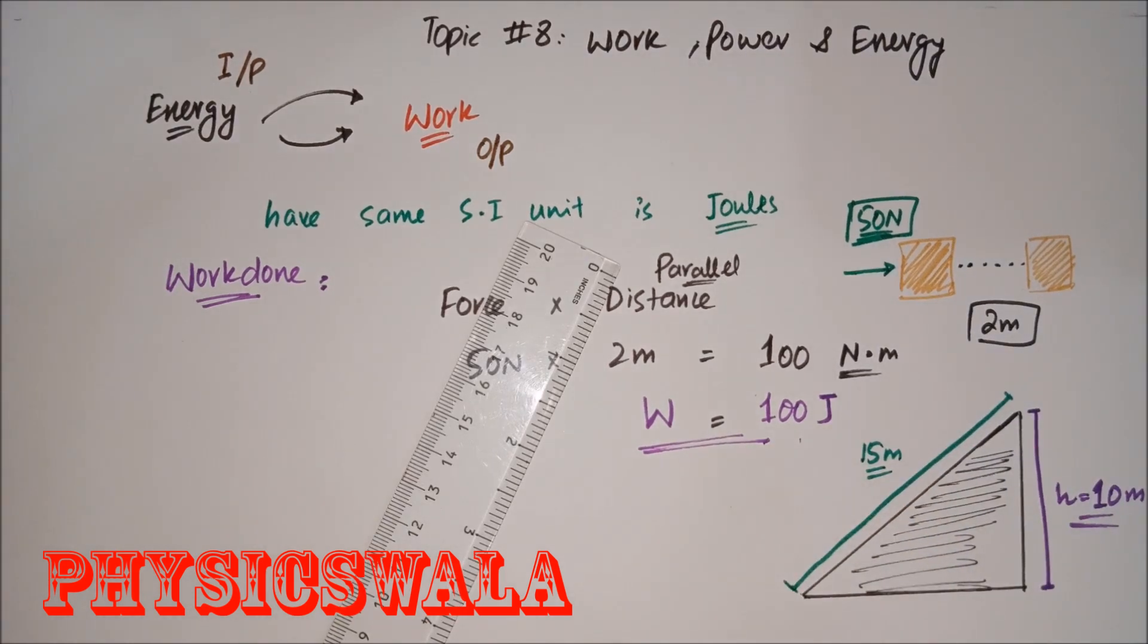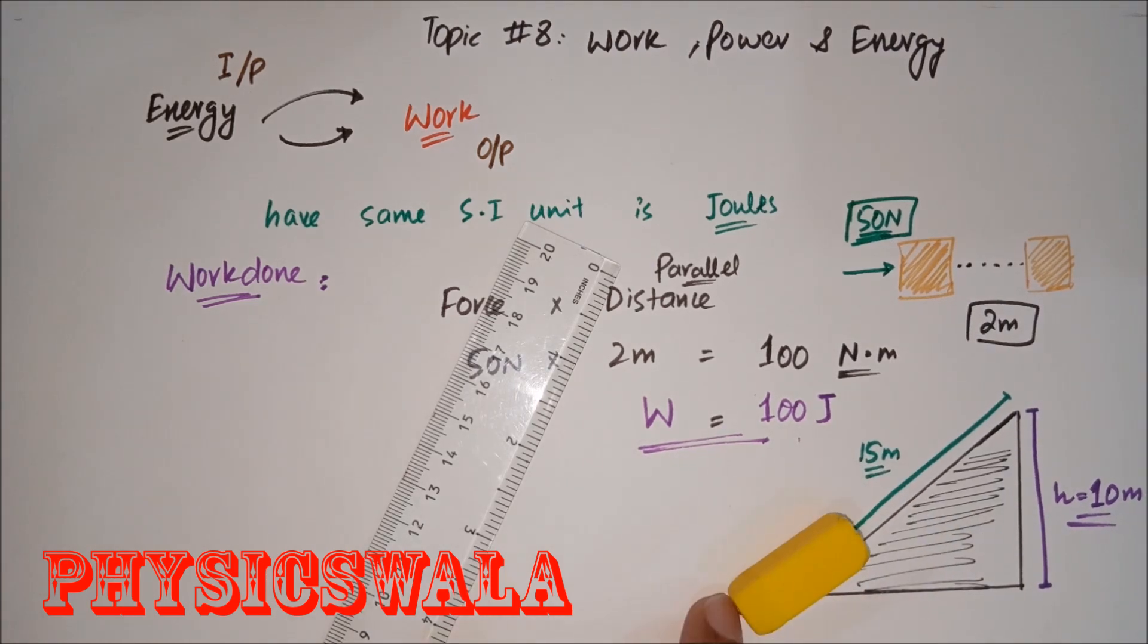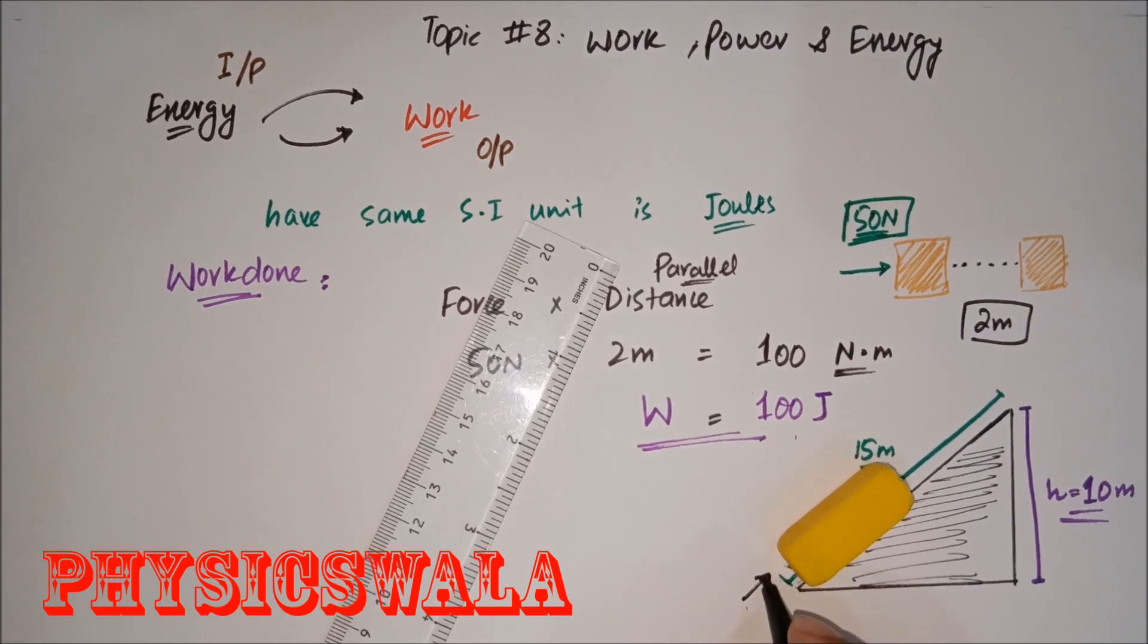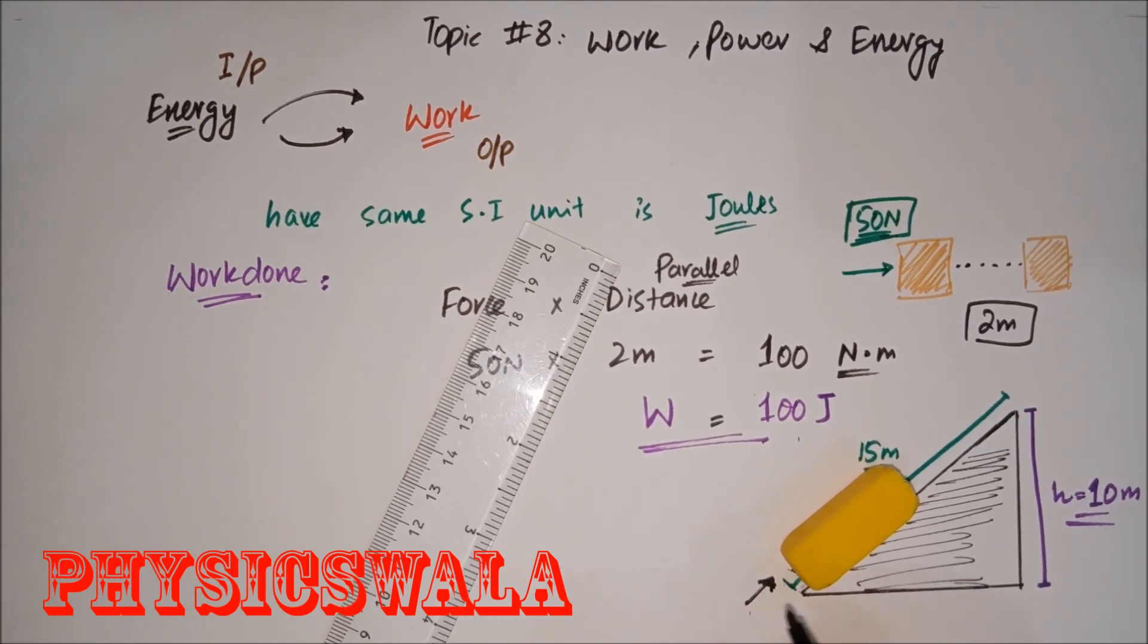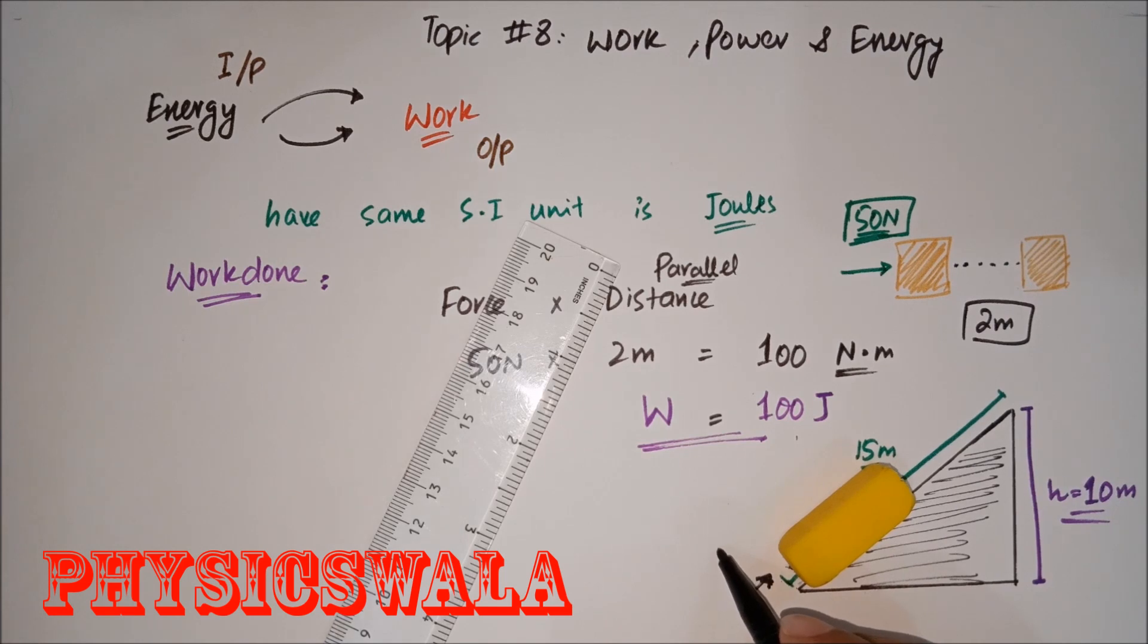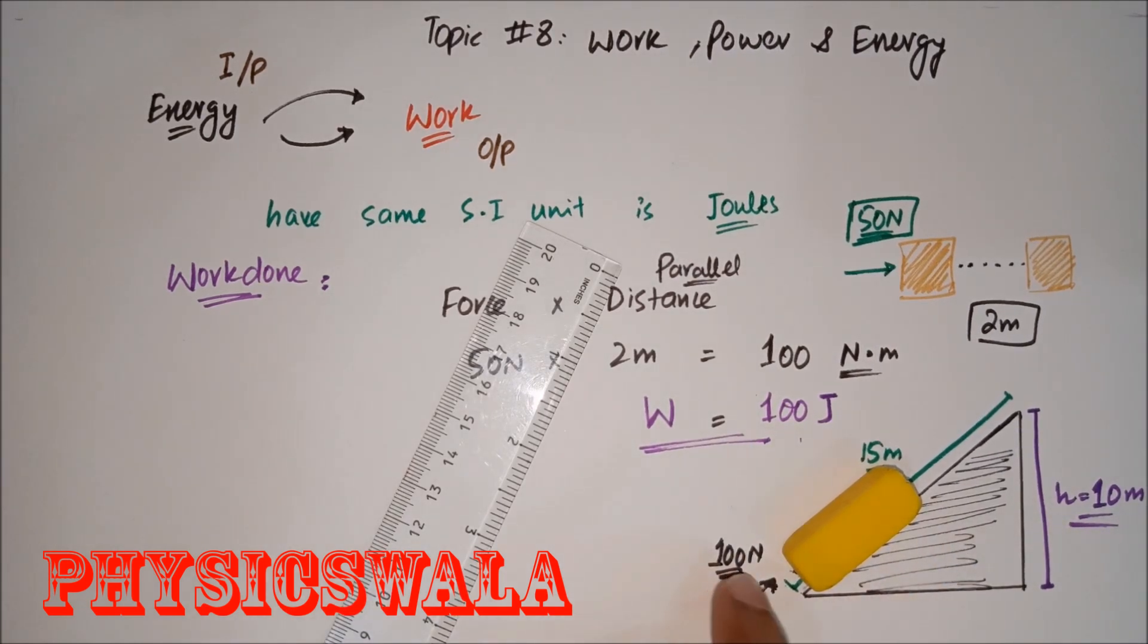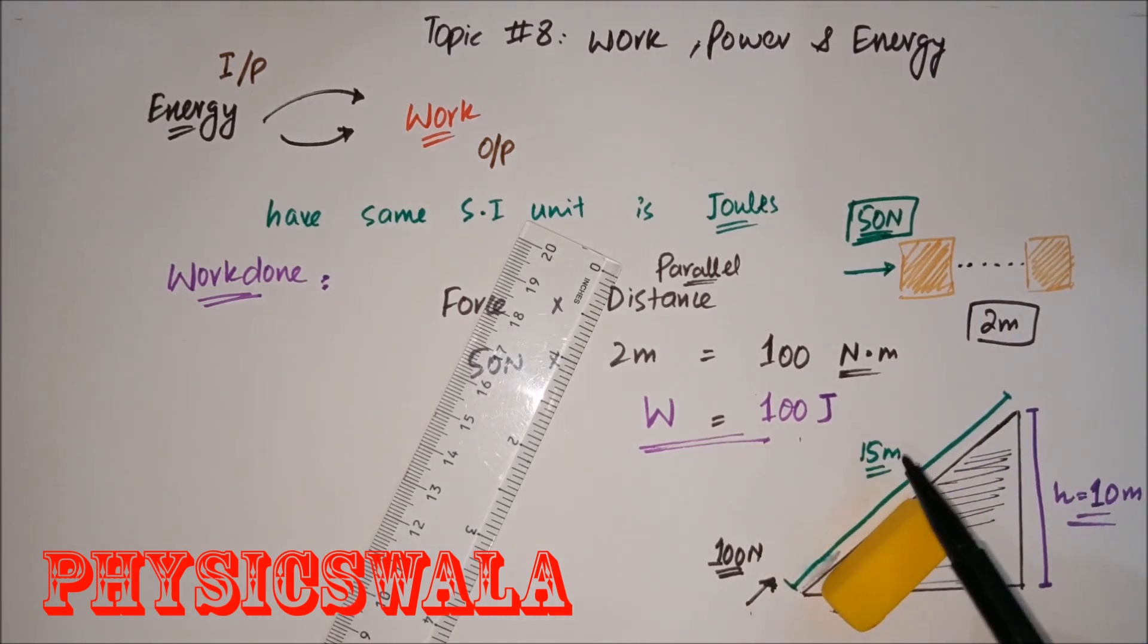Now they tell you that the force you are applying on this object, let's say the value they are going to give you, and this is the direction of force you are applying. Let's say you are applying 100 Newtons. It's a heavy box and you are trying to take this box up to that point.